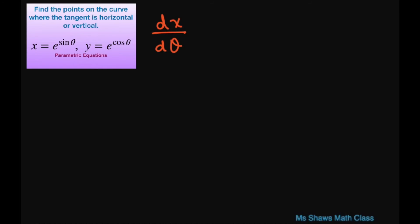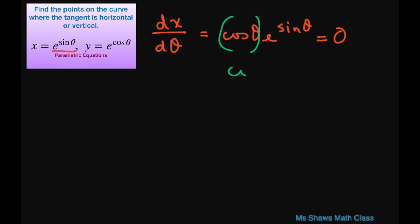Vertical tangents occur when you take the derivative of x with respect to theta and set it to zero. Looking at x, that's going to equal cosine of theta times e to the power of sine of theta. Setting this to zero means cosine of theta must equal zero. Cosine of theta equals zero when theta is pi divided by 2 or 3 pi divided by 2.